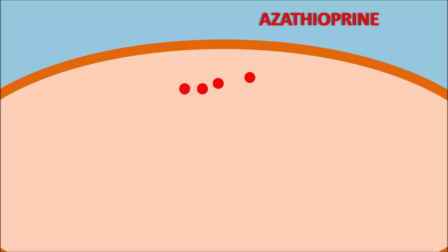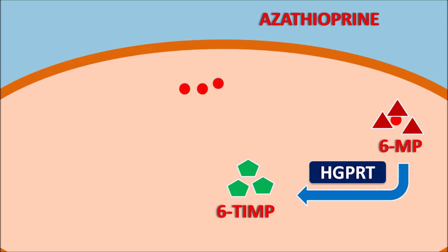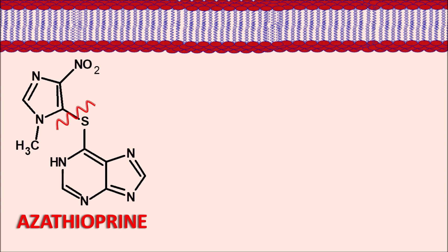Azathioprine enters cells where it is converted into its active metabolite 6-mercaptopurine. This 6-mercaptopurine is then converted into another metabolite, 6-thioinosine monophosphate (6-TIMP), mediated by the enzyme HGPRT (hypoxanthine guanine phosphoribosyl transferase). Azathioprine is a prodrug that is cleaved to produce 6-mercaptopurine, which is mainly responsible for its anti-metabolite activity.